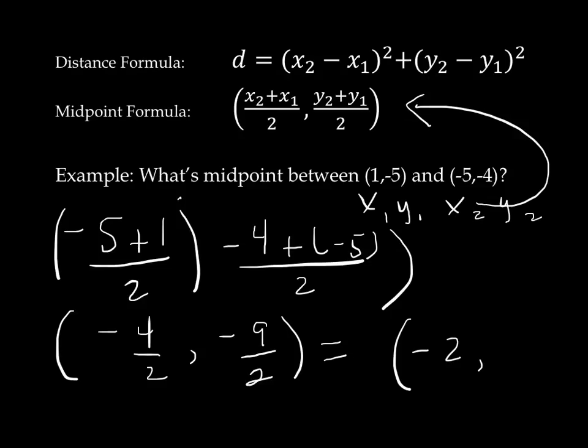And this fraction doesn't reduce, so I could leave it as negative 9 over 2, or if you wanted to write it as negative 4.5. But I'm going to choose to leave it as a fraction. And there is my midpoint.